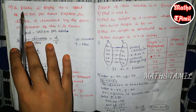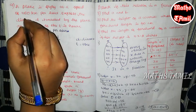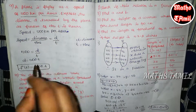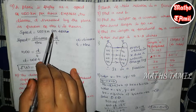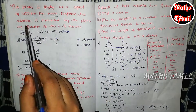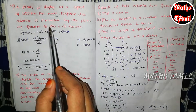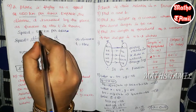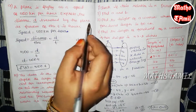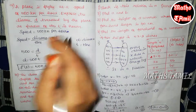A plane is flying at a speed of 500 km per hour. So speed is 500 km per hour. Express the distance d traveled by the plane as a function of time t. So, distance d traveled by the plane as a function of t, f of t.